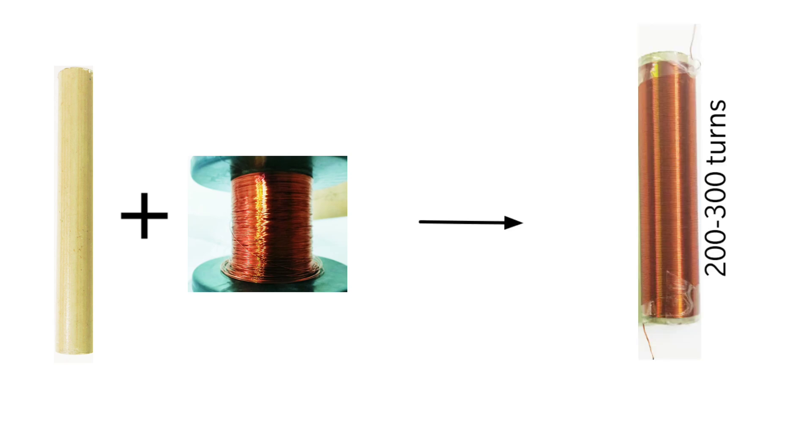Make the secondary coil by winding the 28 gauge copper wire about 200 to 300 turns on the PVC pipe.